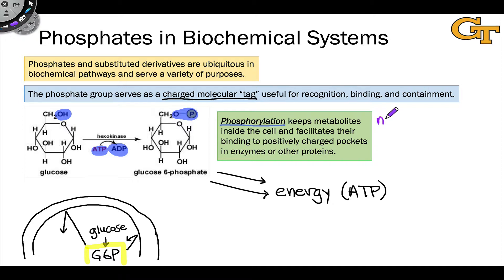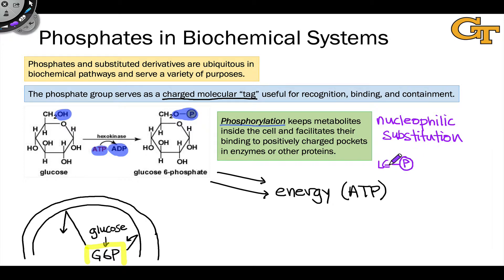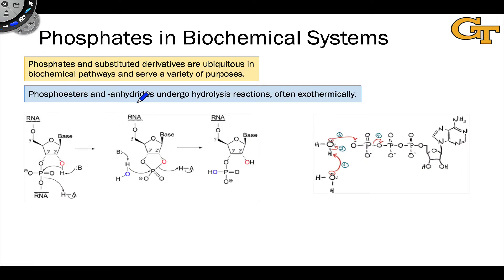Phosphorylation is essentially a nucleophilic substitution process. The phosphoryl group is electrophilic at phosphorus, and in ATP the remainder of the molecule — the ADP portion — acts as a massive leaving group. Combined with a nucleophile, this gives a nucleophilic substitution in which the nucleophile displaces adenosine diphosphate to establish a new bond between a phosphoryl group and the nucleophile. PO bonds in phosphoesters and phosphoanhydrides can also readily undergo hydrolysis reactions, typically leading to phosphates or lower phosphoesters.